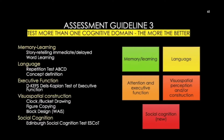In terms of memory and learning, because memory is so important to test and because episodic memory is so prevalent in individuals with Alzheimer's, I recommend a standardized test of story retelling that has an immediate and a delayed condition. Another type of test is word learning, where an individual is given a longer list of words and has to remember them immediately and then in a delayed condition, sometimes with cues.